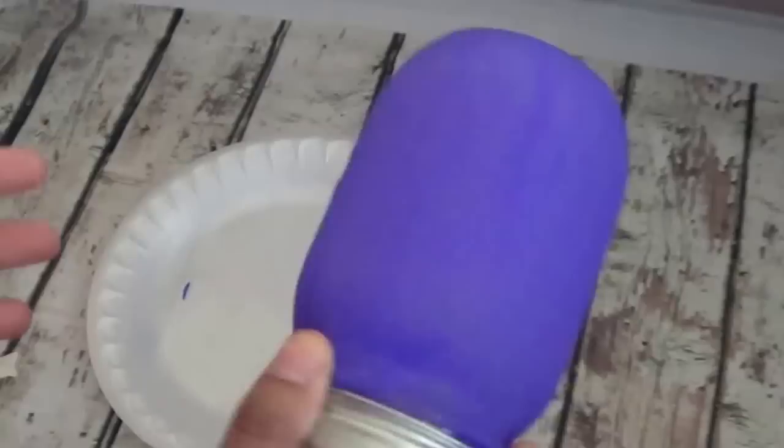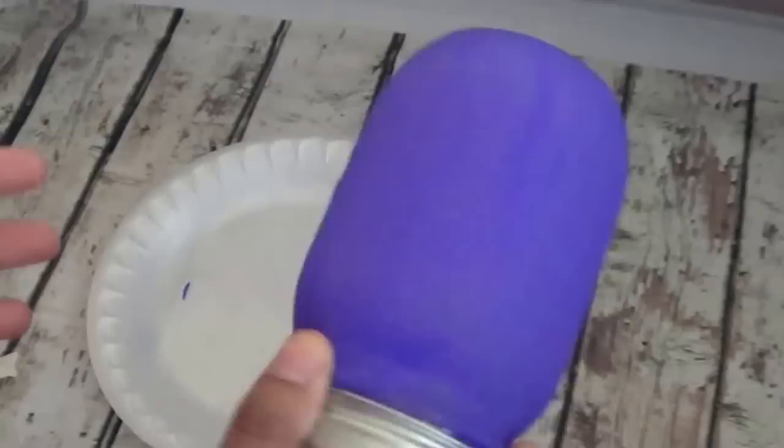As I complete my second coat, I'll set it down once again to dry and be right back. As you can see, the mason jar is now completely dry. I have no paint touching my hands whatsoever. It's not wet at all.